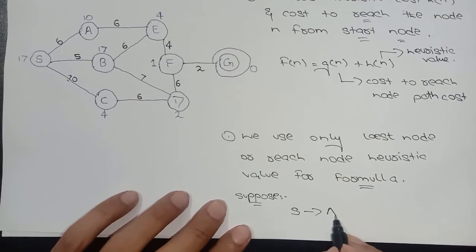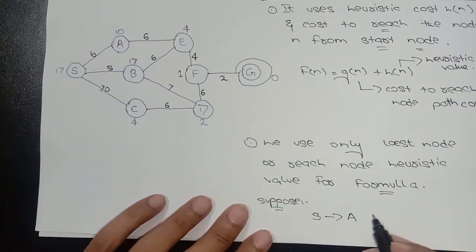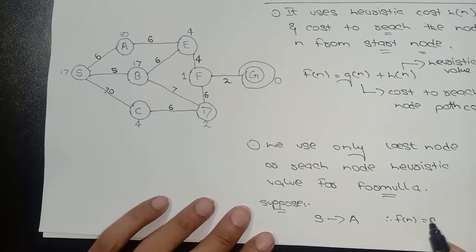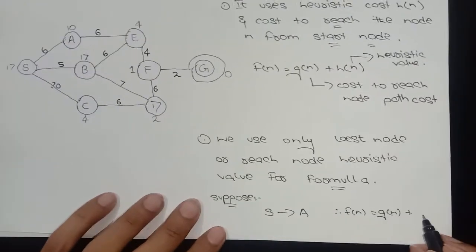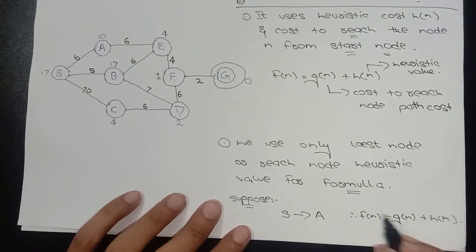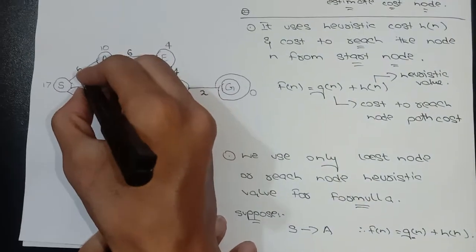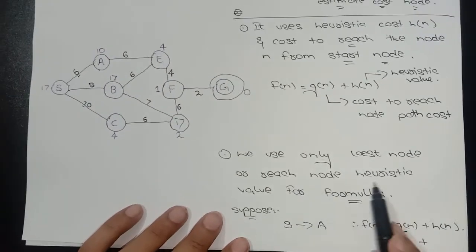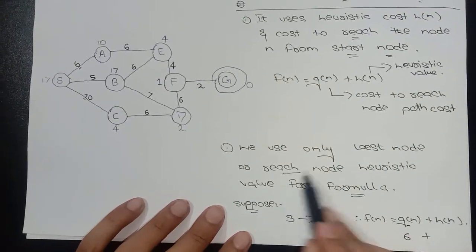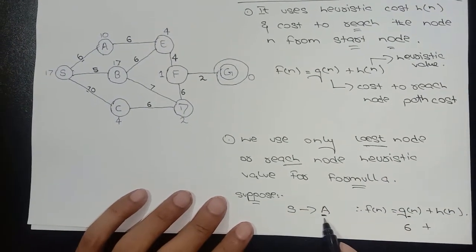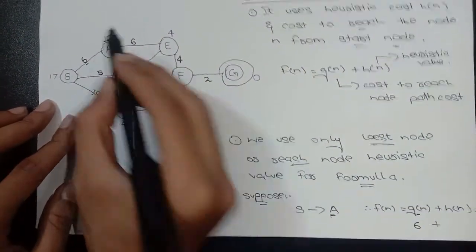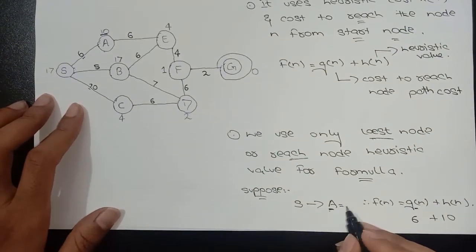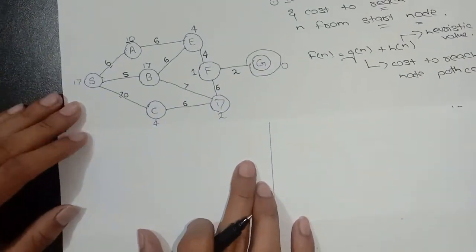Suppose this is a short example: I want to go from S to A. With the formula f of n equals g of n plus h of n, I will not consider the heuristic value of S which is 17. I will consider the cost to reach node A, which is g of n equals 6, and h of n is the heuristic value of the last node A, which is 10. So it becomes 16.